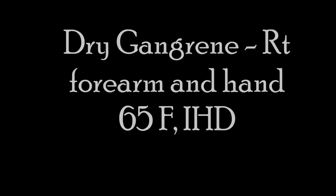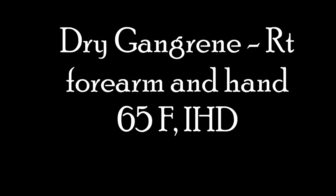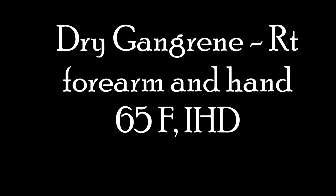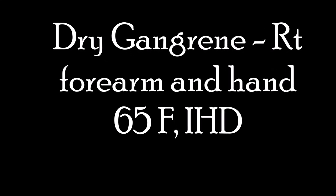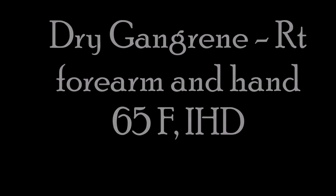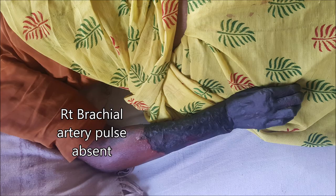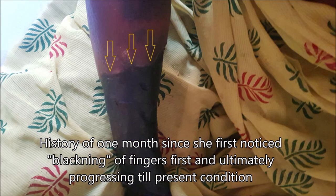Discussion of dry gangrene in the right forearm and hand in a 65-year-old female with ischemic heart disease. Here you can see the mummified skin of the lower right forearm and the hand. The arrow shows the clear demarcation between the normal skin and the mummified skin.